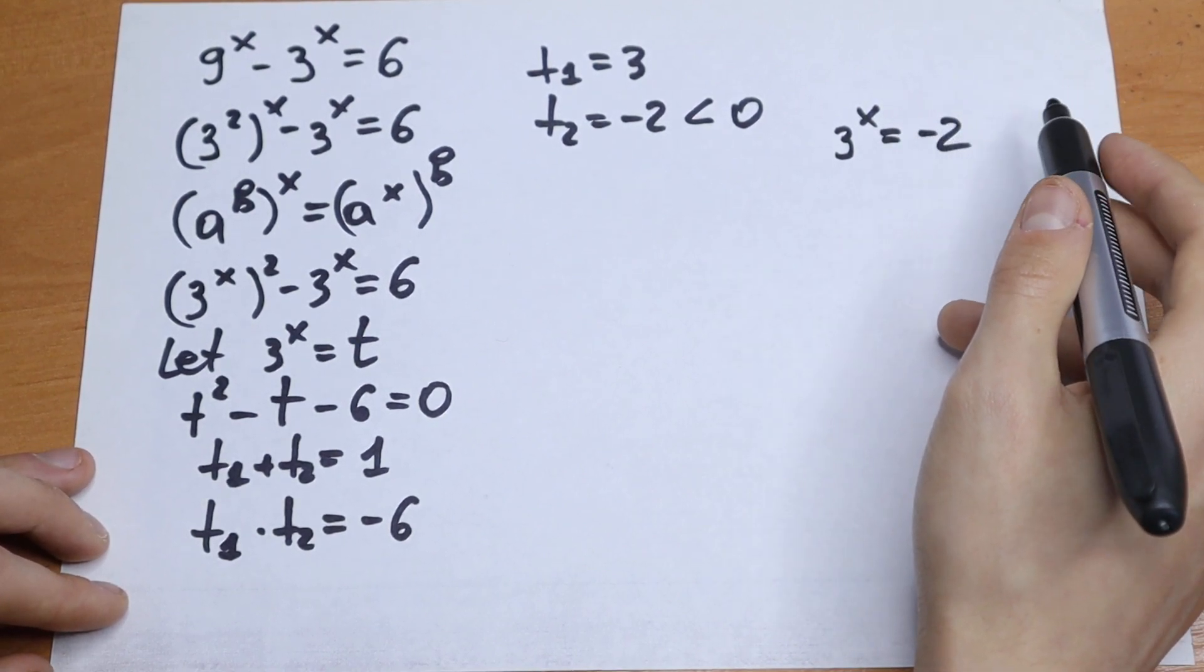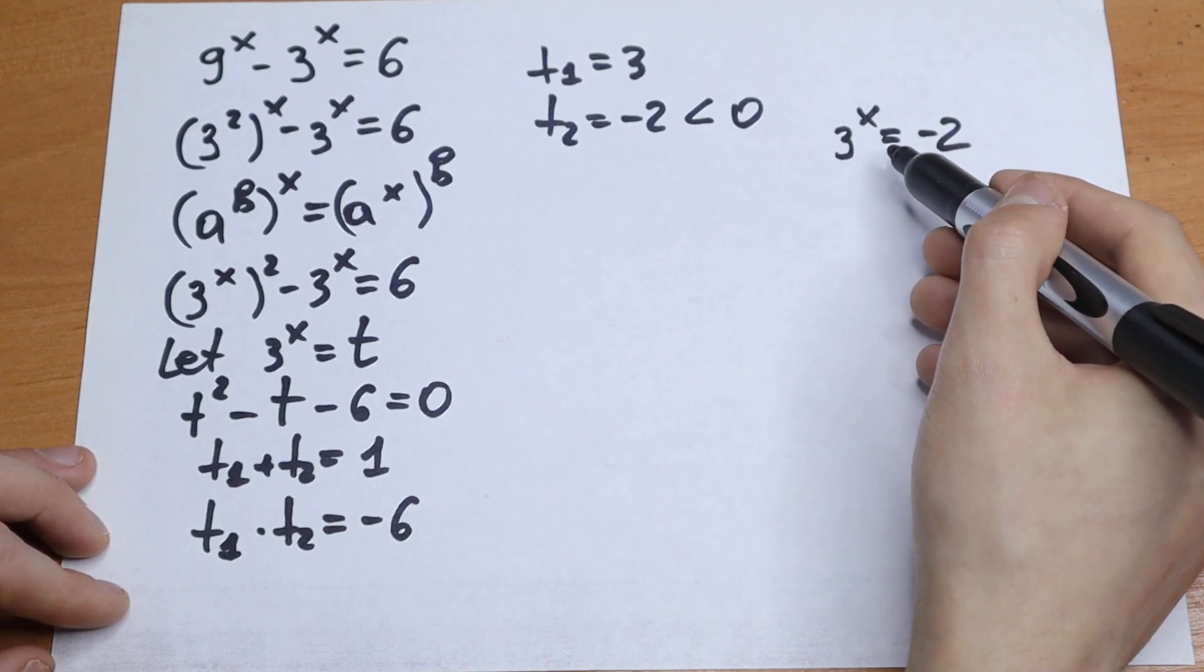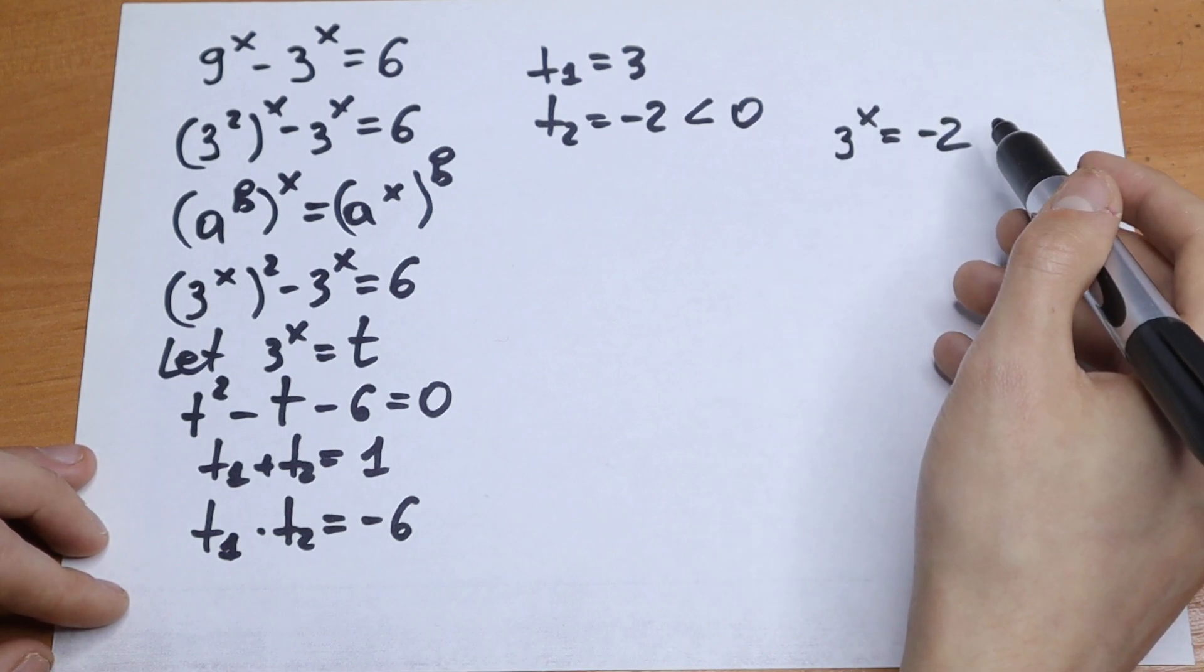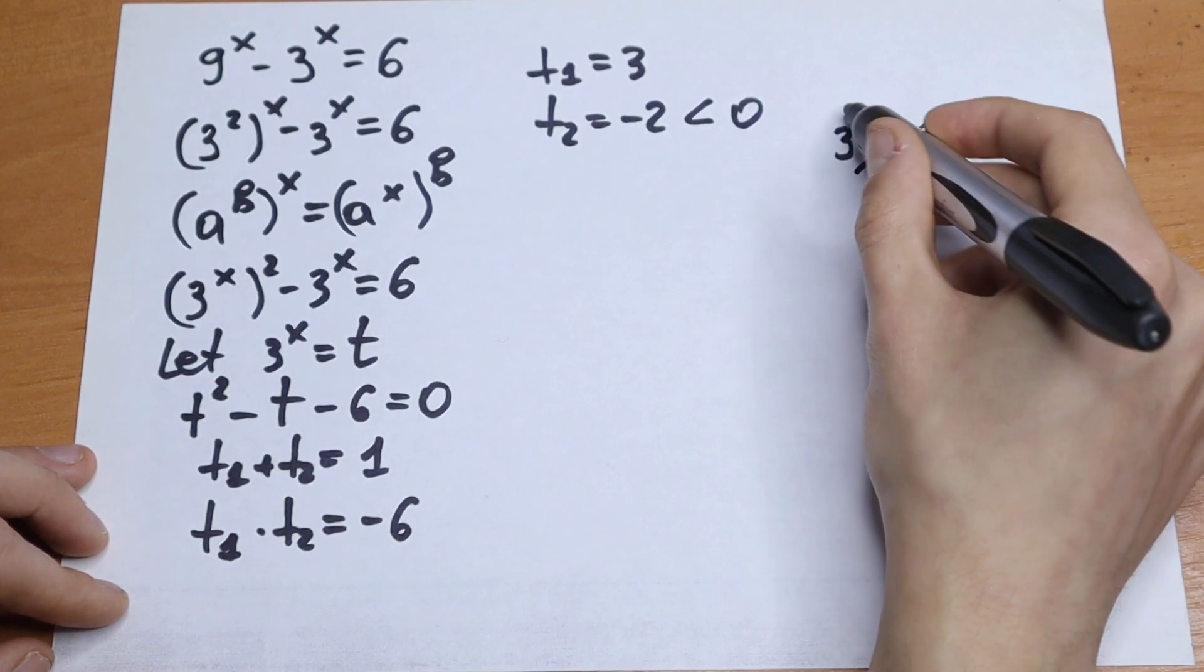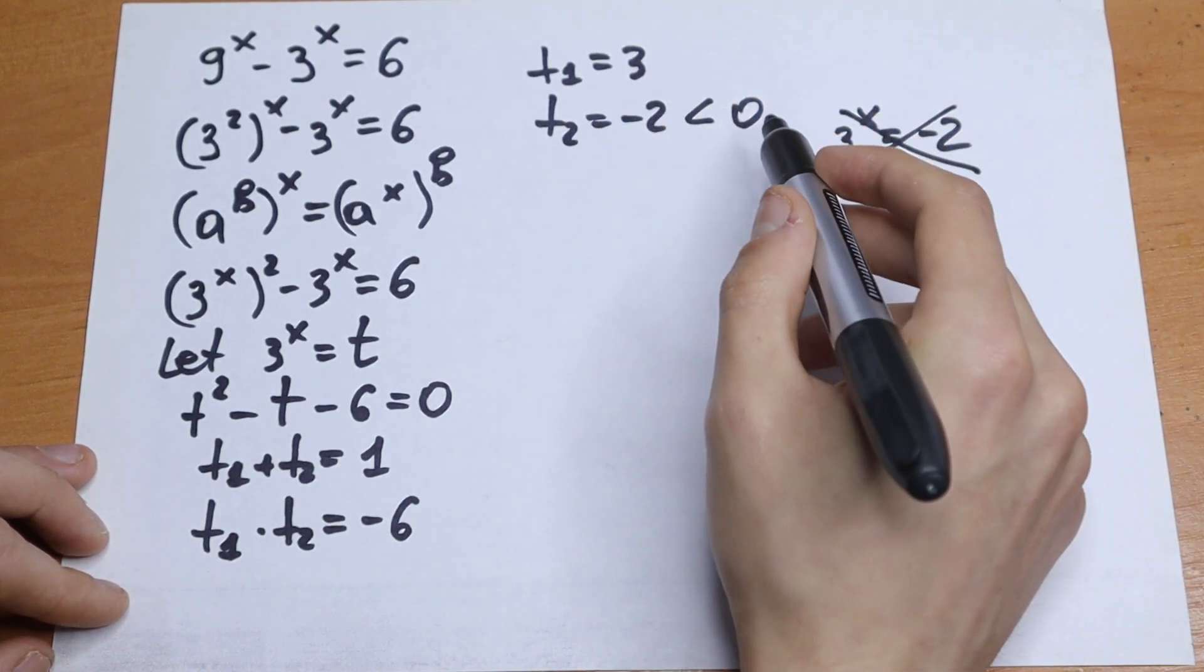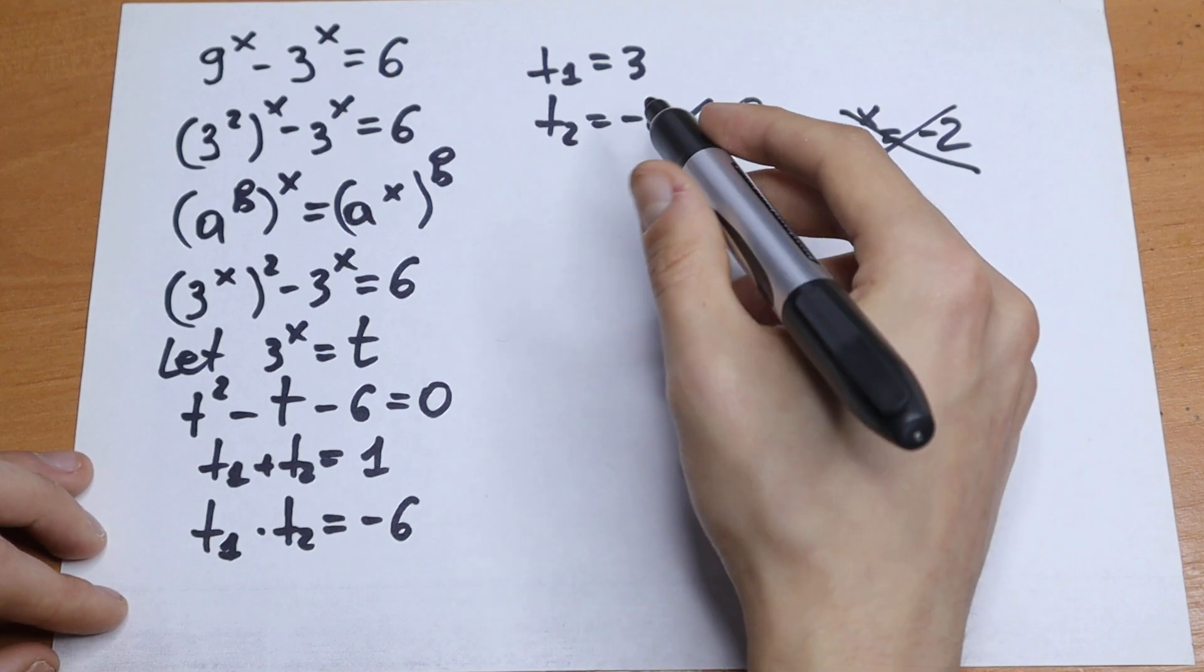This equation does not have any solution because 3 to the power x will have only positive solutions. So this has no roots, and we reject our negative root right here.